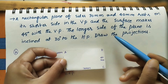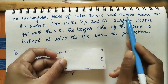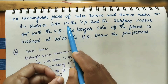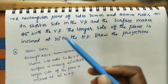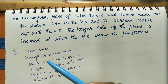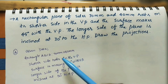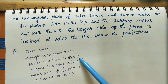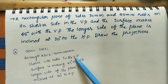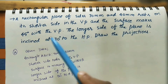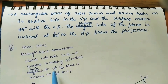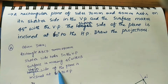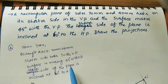Now let us note the other given data. The rectangle of 70 mm and 40 mm rests on its shortest side in the VP — one of the shorter sides is in the VP. The surface makes 45 degrees with the VP, and the shorter side of the plane is inclined at 60 degrees to the HP. Write down all given data first.